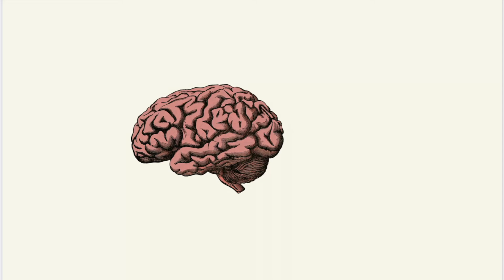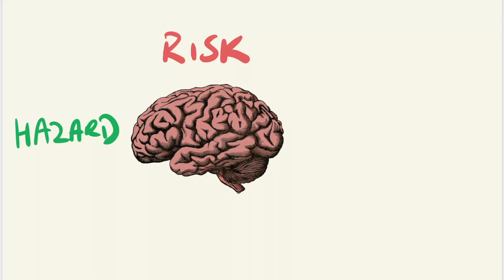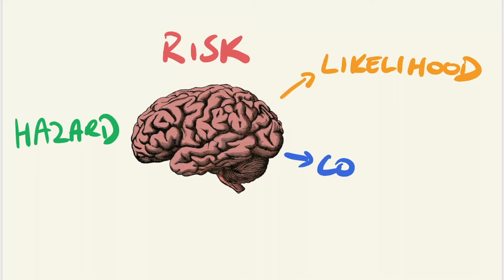Our brains can either consciously or subconsciously make a judgement on these hazards and evaluate what is the most appropriate action to take. This process is the determination of the risk of a hazard. While a hazard is something that has the potential to harm you, the risk is the evaluation of the likelihood that that hazard causes you harm and the consequence if it does so. Therefore, imagine likelihood as the probability of it occurring and consequence as the impact of the event occurring.